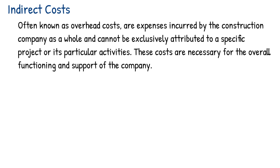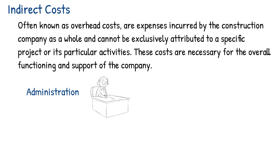Examples of indirect costs in construction projects can include administrative expenses: costs associated with general company management, administrative staff, office supplies, utilities, insurance, legal fees and accounting services.